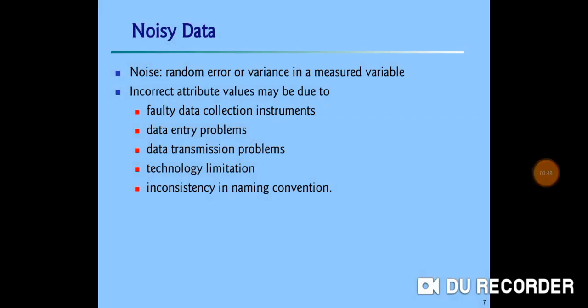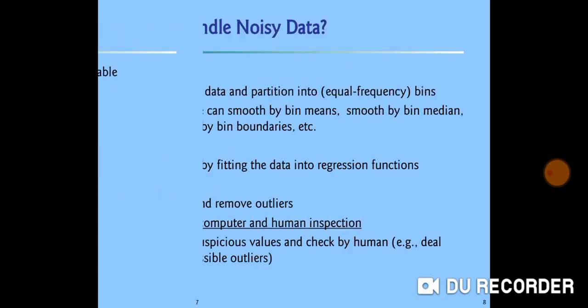Next we will see noisy data. For that purpose we will see what is noise. Noise is random error or variance in measured variables. I will give you one example. Suppose we have a database of temperature in Pune city. Normally it will have the entries from 15 degree Celsius to 40 degree Celsius. But suppose we find an entry of 90 degree Celsius. It is noise. These attribute values may be due to faulty data collection instruments or data entry problems, data transmission problems, technology limitations or inconsistency in naming convention.